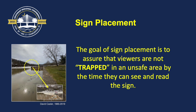Before we go over each sign element in more detail, let's talk about sign placement. You can have the greatest sign known to mankind, but if you put it in the wrong location it's going to be totally ineffective. The goal of sign placement is to assure that viewers are not trapped in an unsafe area by the time they can see and read the sign. The image on the left is an actual dam on the Muskingum River. In 2019, David Kassler and his wife were kayaking; she exited but by the time he saw the small sign on the dam it was too late — he was trapped, his kayak went over, he was caught in the boil zone and unfortunately passed away.